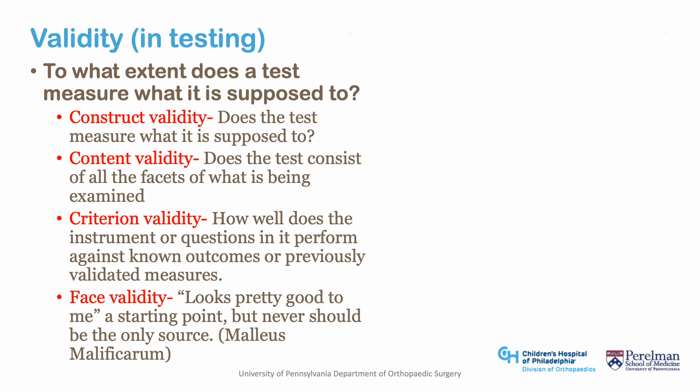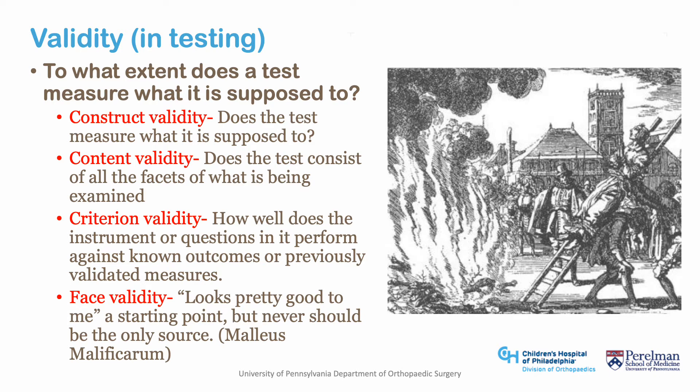Criterion validity typically compares a novel construct against a gold standard to assess how well the construct measures when compared to that gold standard test. This type of validity is often broken down into concurrent and predictive validity. Face validity is the weakest form — it simply states that something seems like it's valid. As the Malleus Maleficarum proved in the Salem Witch Trials, face validity is a very poor and even potentially dangerous form of validity.